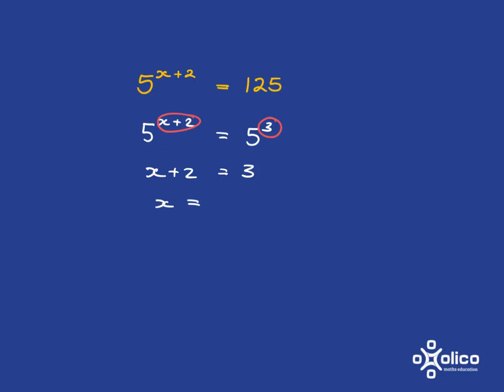And so we get that we need x plus 2 to be equal to 3. And that's a very simple equation for us to solve. If x plus 2 is 3, then x must be equal to 1.